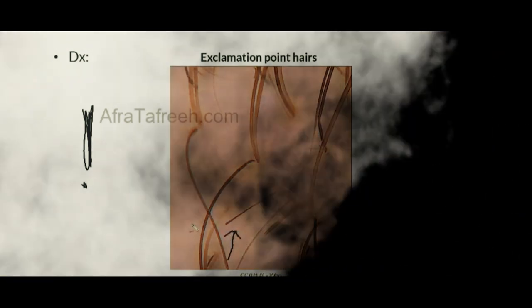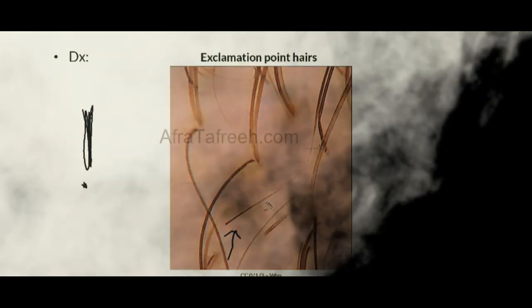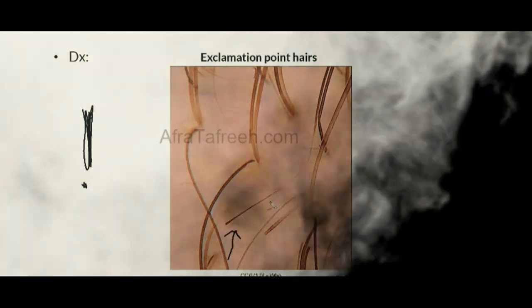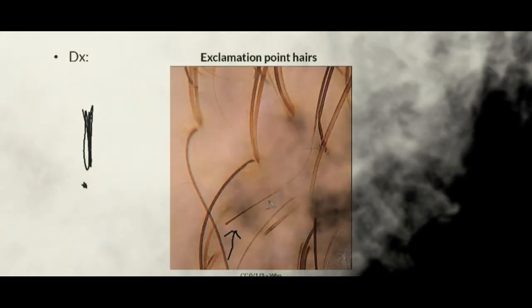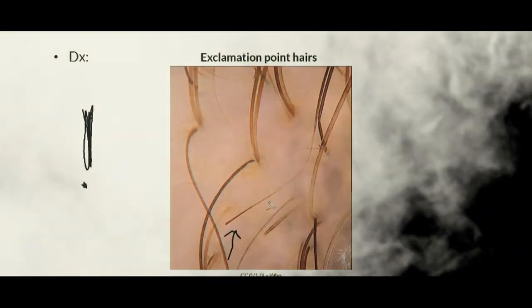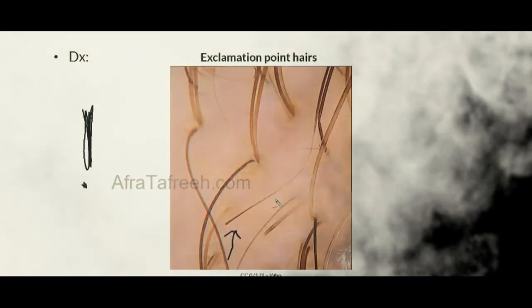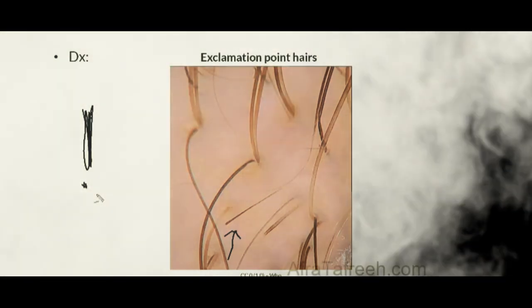One classic feature of alopecia areata that frequently appears on examinations is the exclamation point hair. Like an exclamation point, the most distal portion of the hair is quite thick, but as we move closer to the scalp surface, the hair becomes much thinner. This is because the portion proximal to the scalp is actively under autoimmune attack, making it thin, while the distal portion is not diseased and remains thick. This results in a hair that is thick at the top and thin at the bottom — a classic exclamation point appearance.